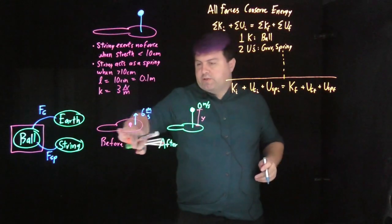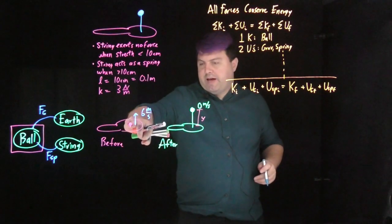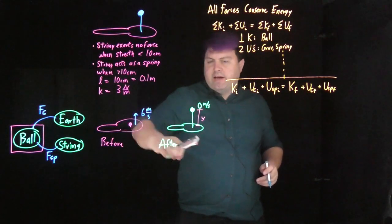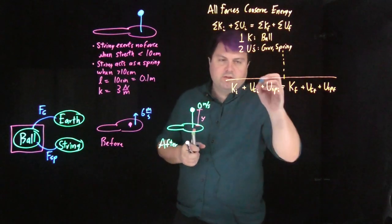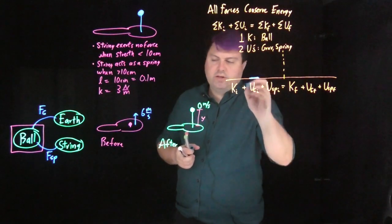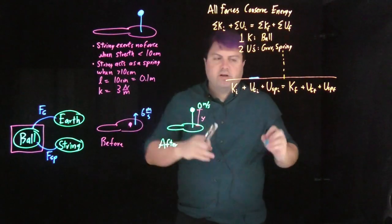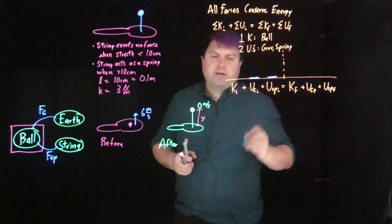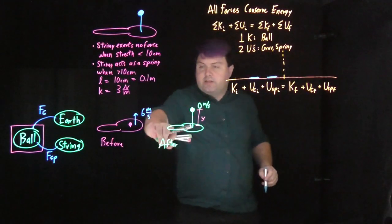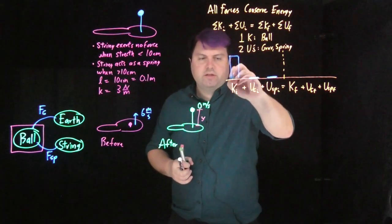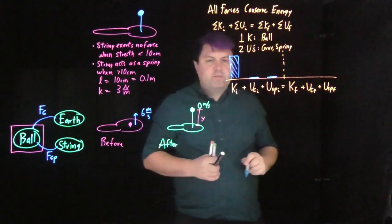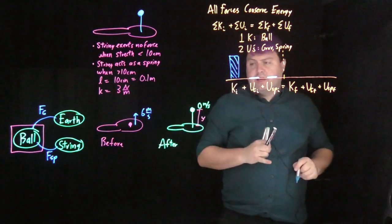It's very useful to do bar charts to figure out what's zero and what's not zero. In this before state, we haven't moved from the paddle, so we haven't gained any elevation. Right at this point is a great place for the potential energy to be zero. It hasn't stretched at all, so our spring potential energy is also zero. It does have some speed, 6 meters per second, so we do have some kinetic energy.